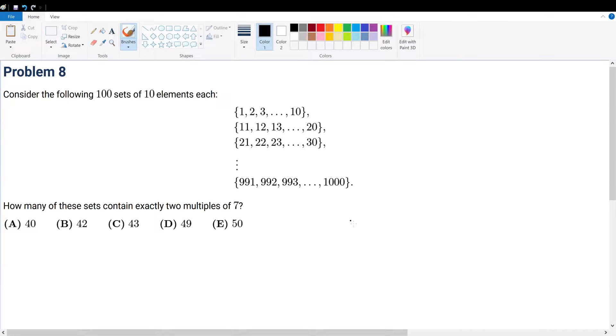Problem 8. Consider the following 100 sets of 10 elements each. How many of these sets contain exactly two multiples of 7?